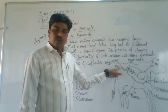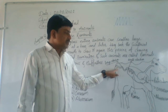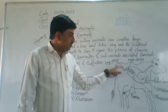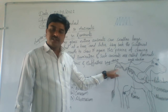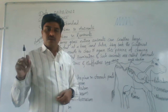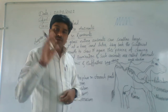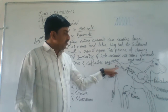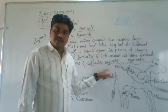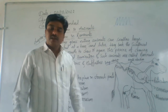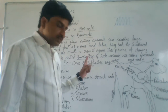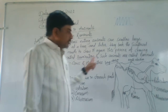The undigested food then enters the large intestine. In the large intestine, salt and water content are completely absorbed, and it forms feces. The feces are excreted through the anus. This process is called egestion.